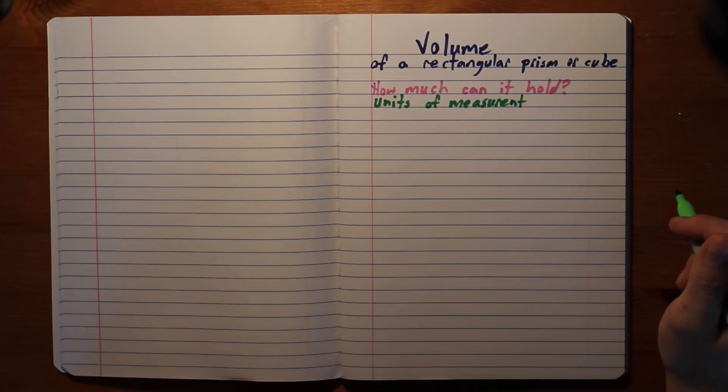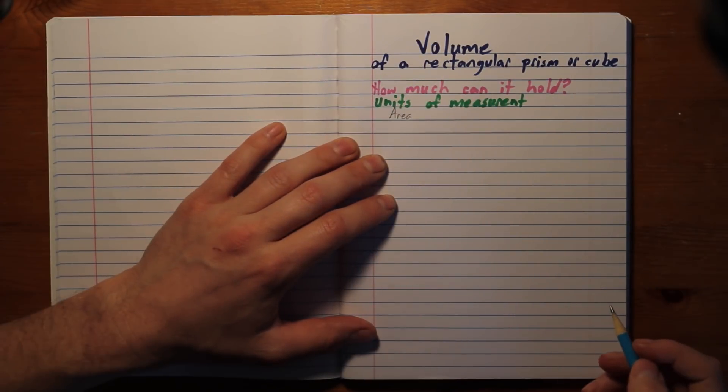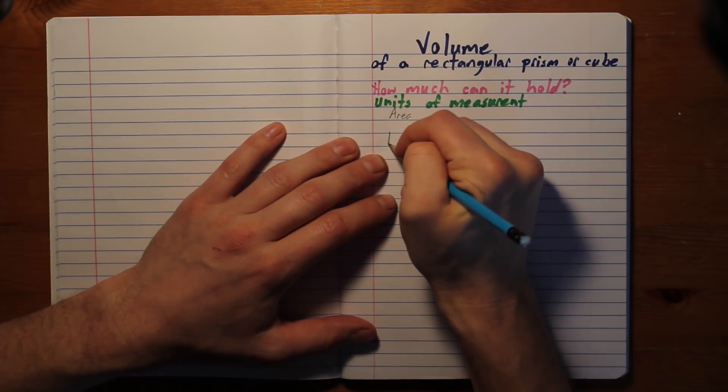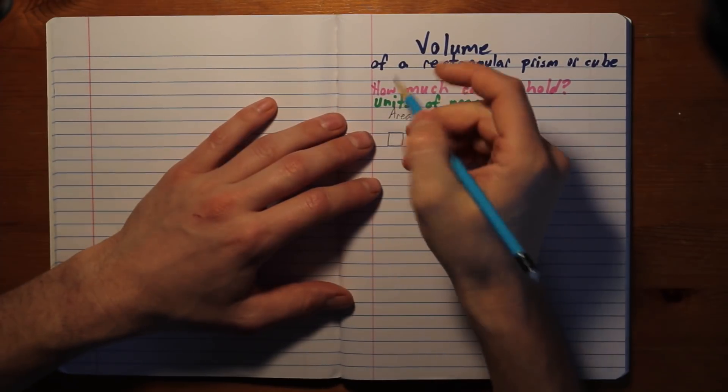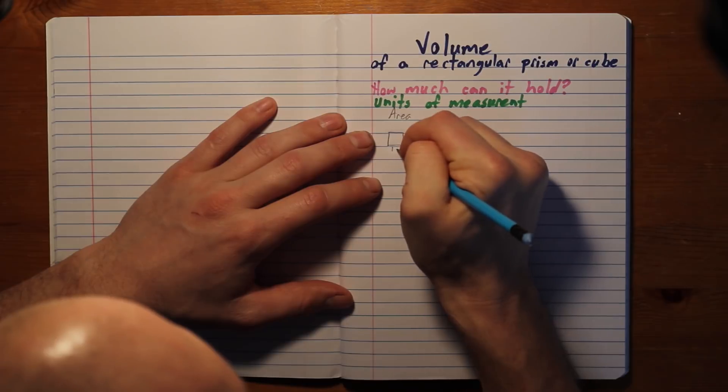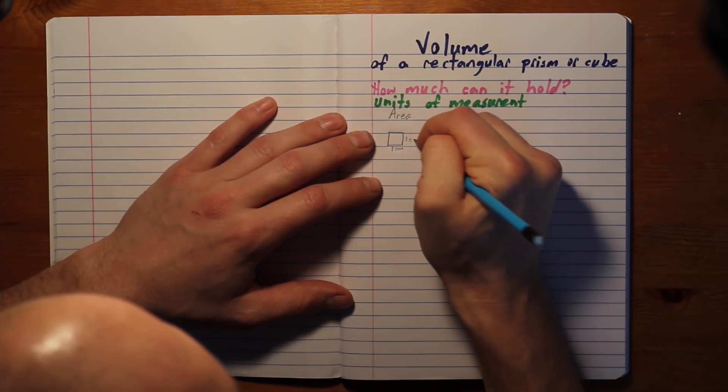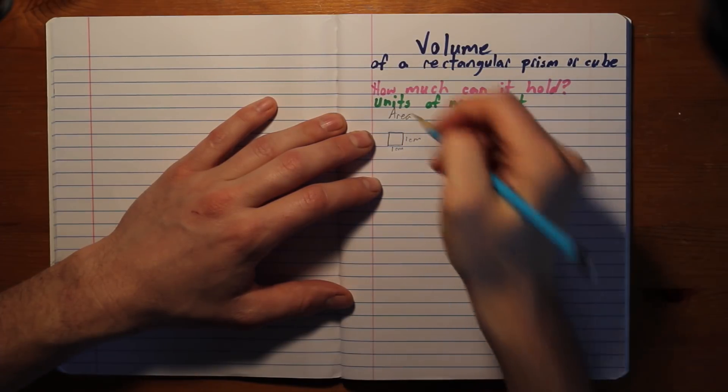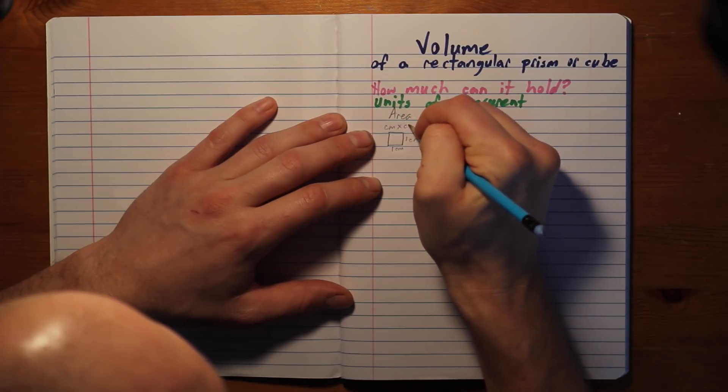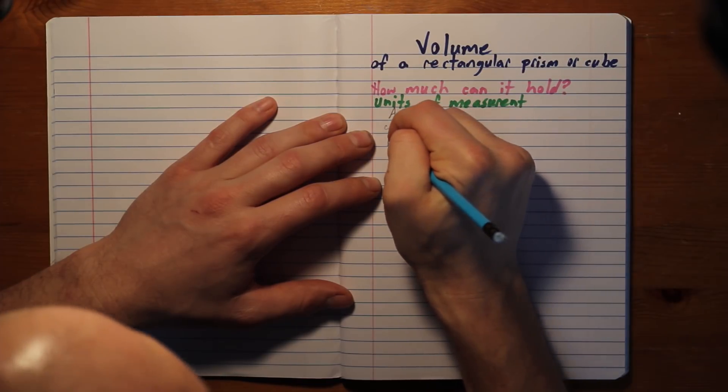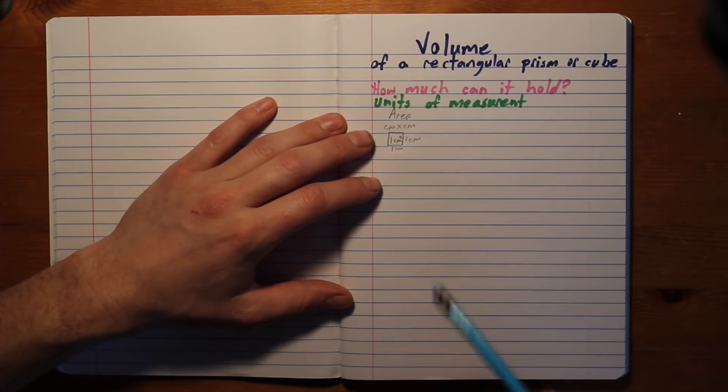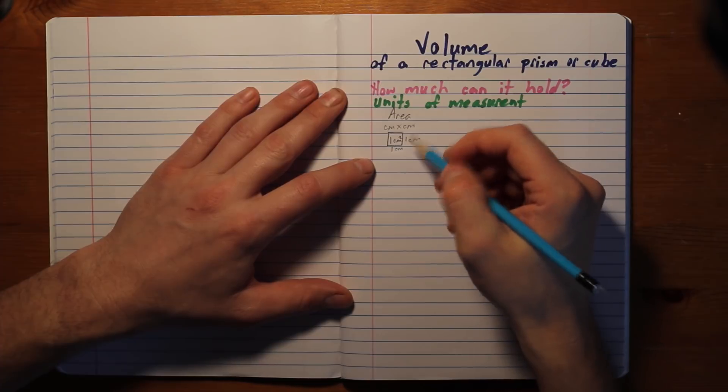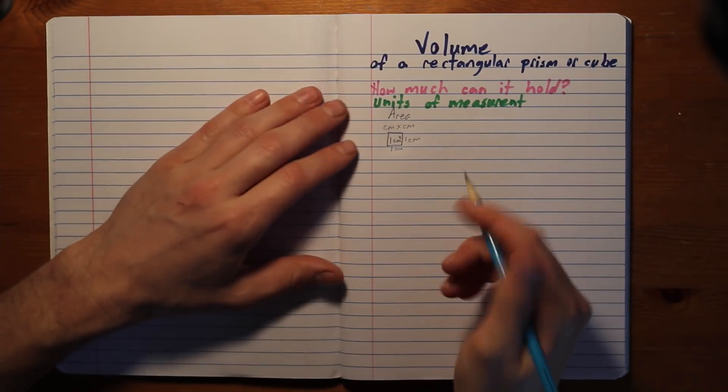When you think of this, think about area. When we talked about area, we talked about if we had a square unit, it's a two-dimensional figure. Let's say this was one centimeter and one centimeter. To find area, we did centimeter times centimeter. And so we ended up saying this was one centimeter squared. That's two-dimensional.